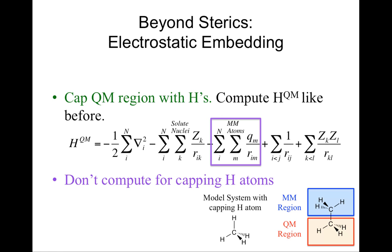As I briefly mentioned earlier, we will cap the partitions with hydrogen atoms. Using the ethane example, I showed how we would cap the QM partition with a hydrogen atom. One thing to keep in mind is that this hydrogen atom is, in a sense, fictitious — it doesn't exist in the real system, and we're placing it there to facilitate our partitioning. So one thing we don't want to do is compute the nuclear repulsion for these capping hydrogen atoms, which I've put in a box here. The hydrogen atoms are not included in that sum because we don't want to consider the repulsion with atoms that aren't really present in the system.